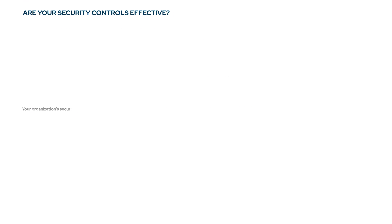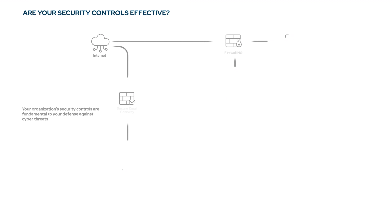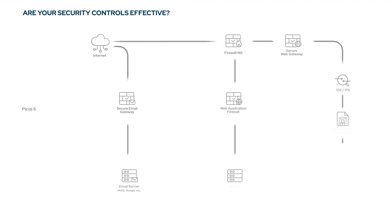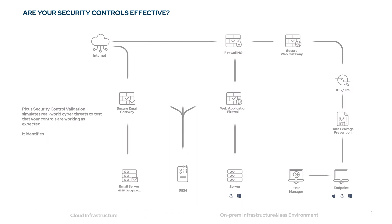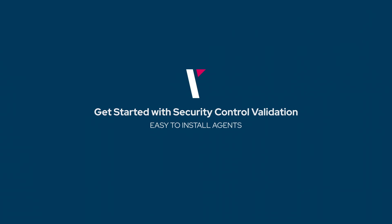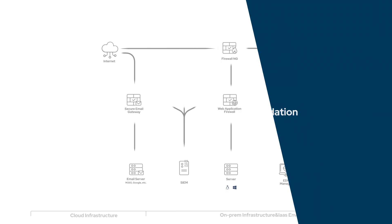Your organization's security controls are fundamental to your defense against cyber threats, but are they providing the level of protection you need? PICAS's security control validation simulates real-world cyber threats to test that your controls are working as expected. It identifies prevention and detection gaps and provides actionable mitigation recommendations to address policy weaknesses swiftly and effectively.